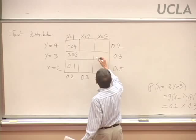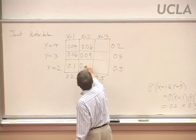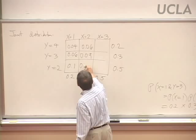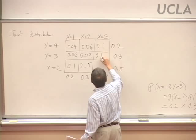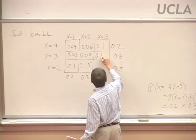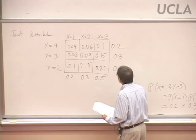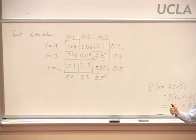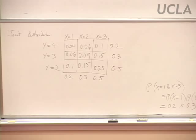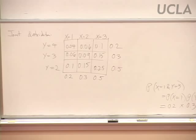Continuing to fill in: entries are 0.06, 0.09, 0.15, then 0.1, 0.15, 0.25 — each row adds up correctly. For independent random variables, we can get the joint distribution just from knowing the marginal distributions. If independence fails, we don't have that simple method and must work them out some other way.